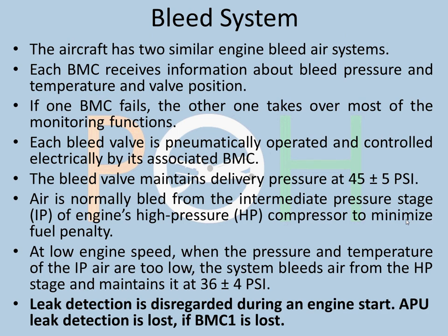The aircraft has two similar engine bleed systems. We will discuss the engine one bleed, which is similar to the engine two bleed system. Each BMC receives information about the bleed pressure, temperature, and the valve position — the bleed valve position. If one BMC fails, the other one takes over most of the monitoring functions. 'Most' is important, because BMC one has certain functions that BMC two cannot take over.